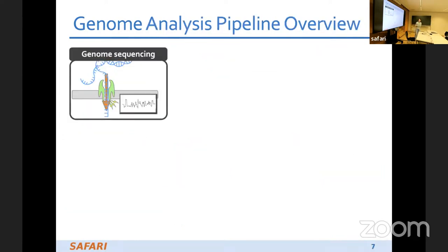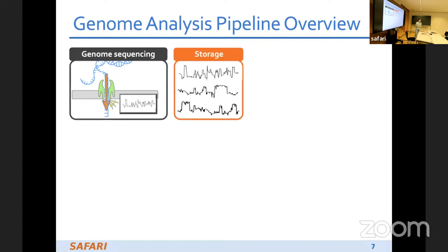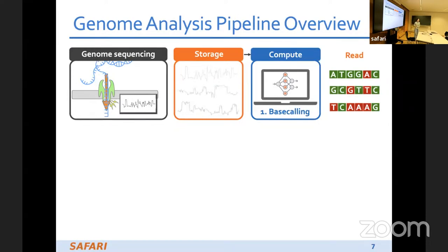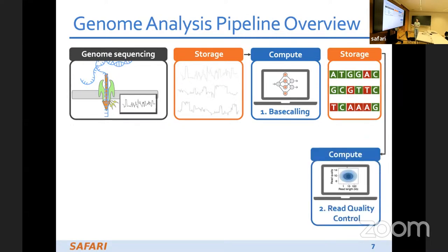Here is a bit more detail about ONT genome sequencing. We get the raw signal data, store it, and then read it out to the computation units to do the first step in the ONT genome analysis: base calling. In the base calling step we translate the raw signals into bases — ACGT — at the granularity of trunks. After translating all the trunks we get a read, and after base calling all the reads we store them and continue with the next step: read quality control.